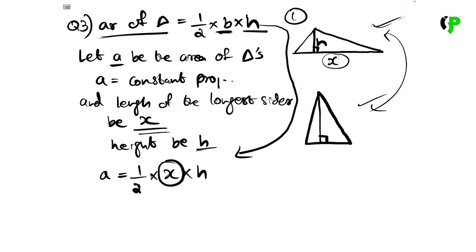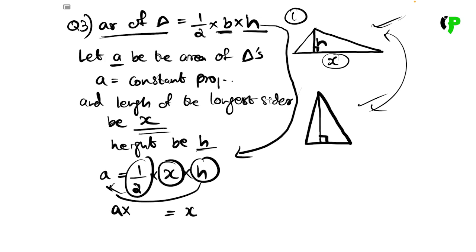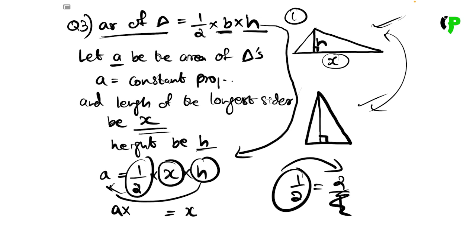What is the meaning? X will be changed because we are looking at the relation between the longest side and the height. The longest side is perpendicular. High means height. So, x is equal to 2A by H. A is constant, 1/2 is constant — dividing by H gives us x = 2A/H.